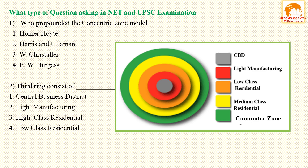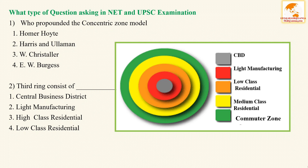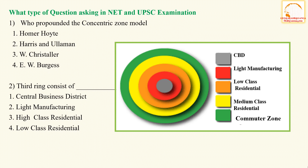For NET and UPSC examination: Question 1 — Who propounded the concentric zone model? Options: Homer Hoyt, Harris and Ullman, Walter Christaller, or E.W. Burgess. Homer Hoyt published the sector model in 1939; Harris and Ullman propounded the multiple nuclei model in 1945; Walter Christaller propounded the central place theory in 1933. The correct answer is E.W. Burgess, who propounded the concentric zone model in 1925.